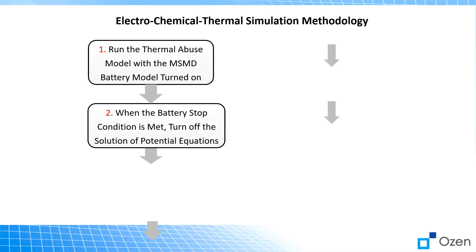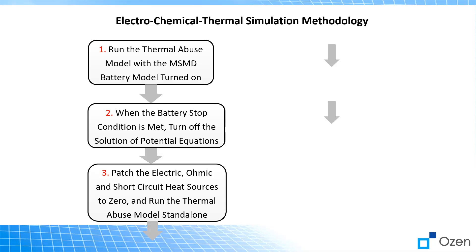Once you have that turned on, step two is that you simulate until a battery stop condition is met. There are several ways to define this, but the idea is you're looking for when the battery has lost most of its potential. One of the most common ways to model this is when the voltage difference between the positive and negative electrodes drops below a certain point. After that point has been met, you turn off the electric, ohmic, and short circuit heat sources — set those to zero — and run the thermal abuse model standalone. The idea is you're turning off those exothermic reactions and now just want to see what happens to the temperature as a result.